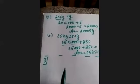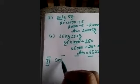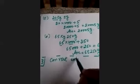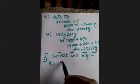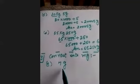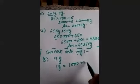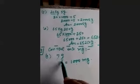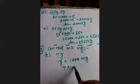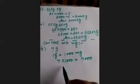Third question: convert into milligrams. Part A is 7 grams. In 1 gram we have 1000 milligrams, so we multiply 7 by 1000. 7 × 1000 = 7000. Our answer is 7000 milligrams.